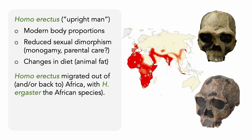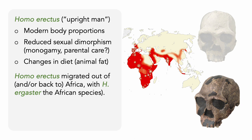Homo erectus is believed to be the first hominin to migrate out of Africa, colonizing northern Africa as well as western and east Asia, and possibly Europe, although there's a lot of debate around the specifics. For some time it was believed that Homo erectus evolved from Homo ergaster, which had been living in eastern and southern Africa, perhaps as far back as 2 million years ago. Yet evidence of Homo erectus in China dates back farther than this, so it might have been a small population of Homo habilis to migrate out of Africa, later becoming Homo erectus with subspecies evolving in China and Indonesia. Homo ergaster is usually classified as Homo erectus sensu lato — the same species in a broad sense.